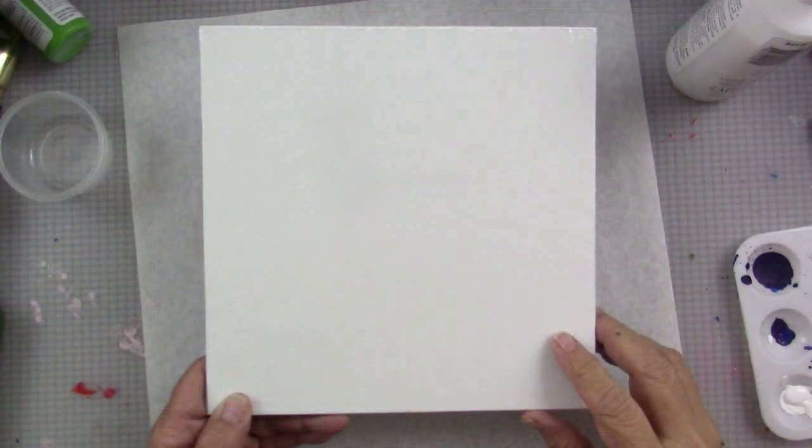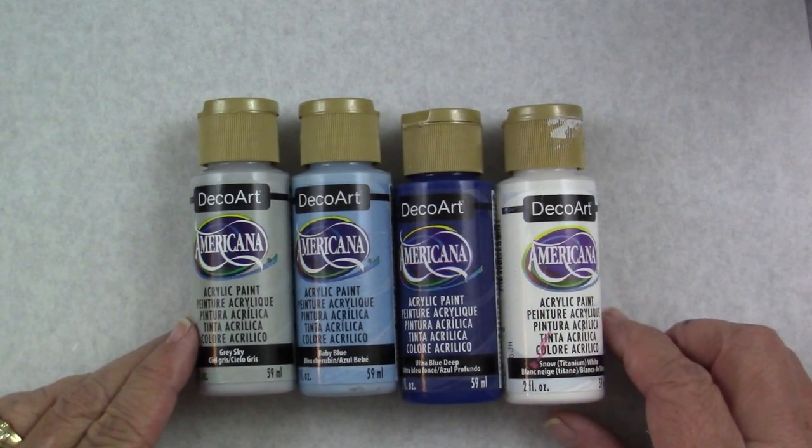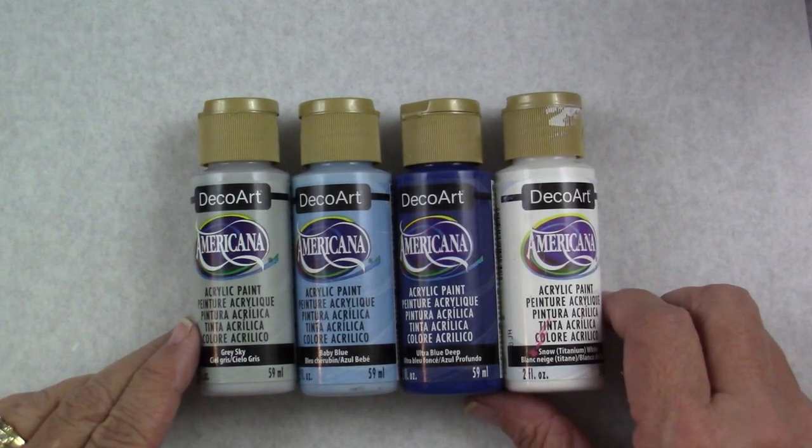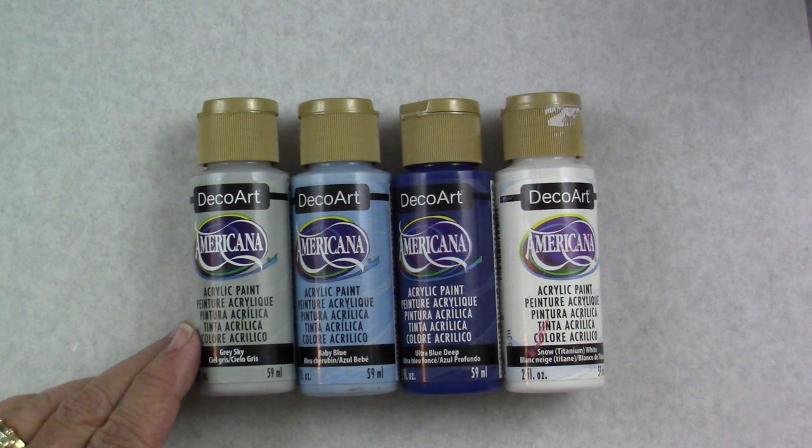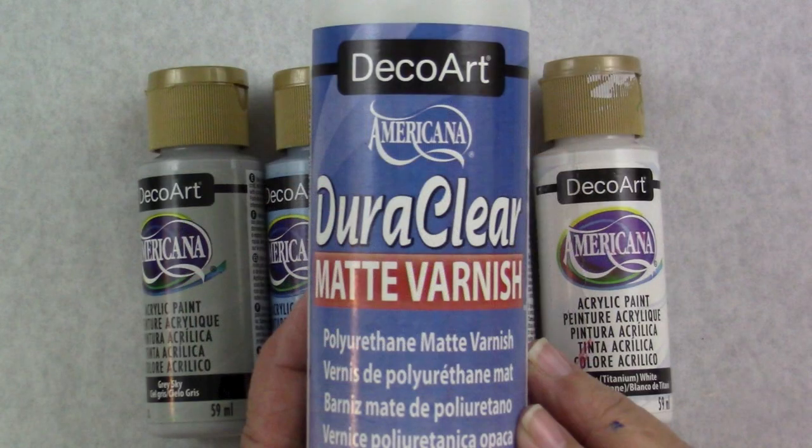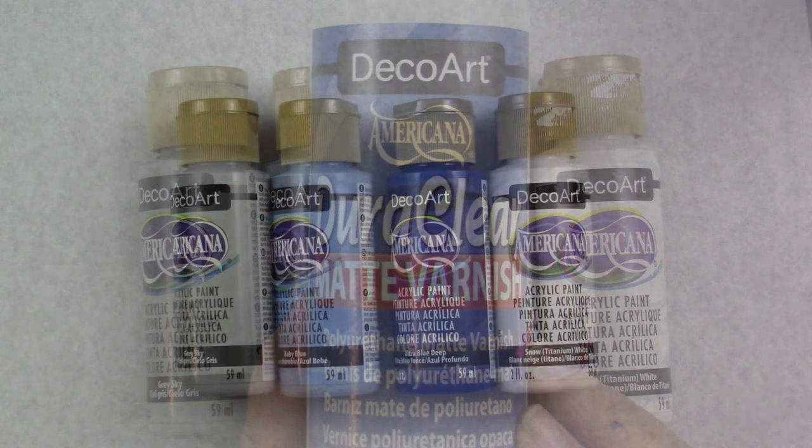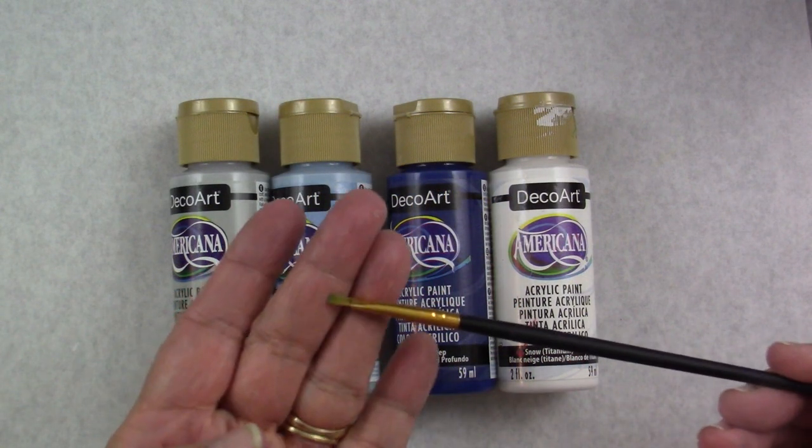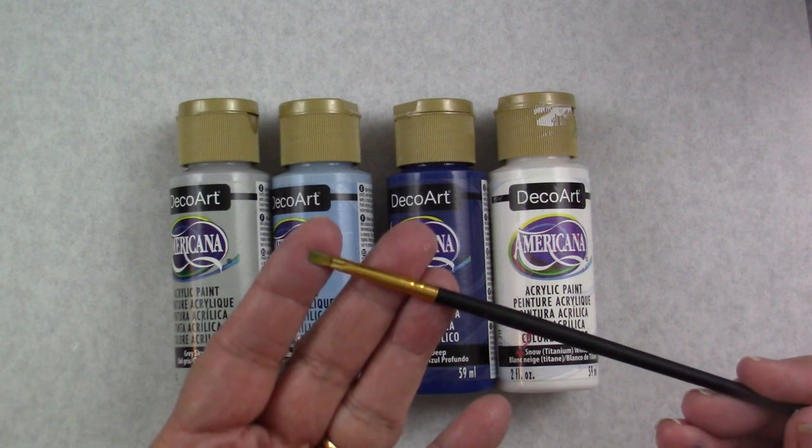We'll use an 8x8 canvas panel, and for the paint I'll be using DecoArt Americana in Grey Sky, Baby Blue, Ultra Blue Deep, and White. I'll also be using the DuraClear Matte Varnish, and a number 2 flat brush.